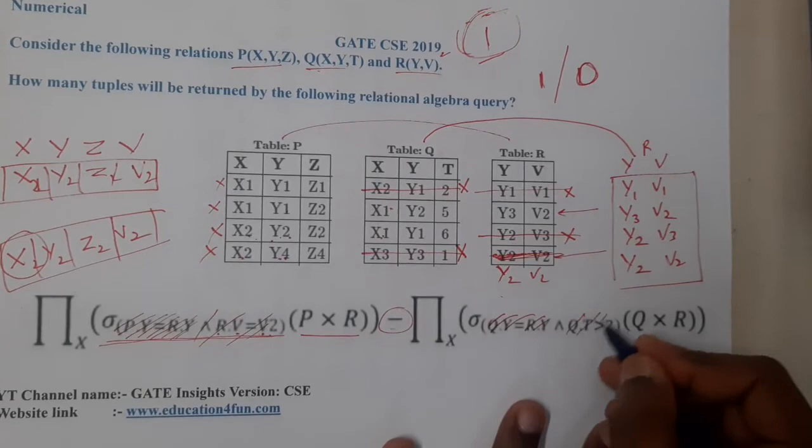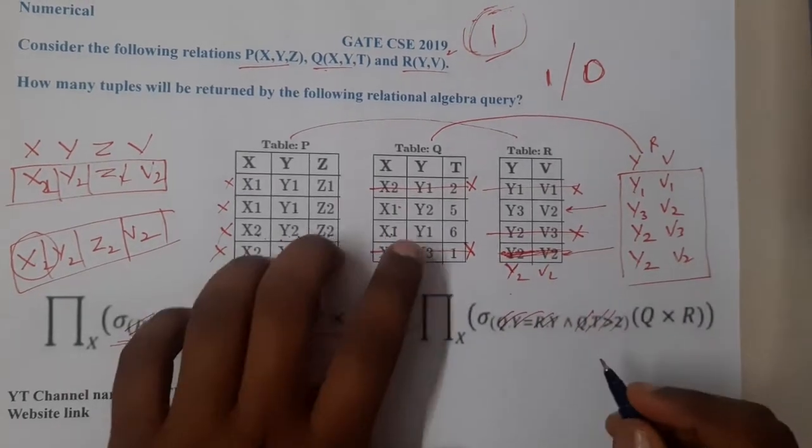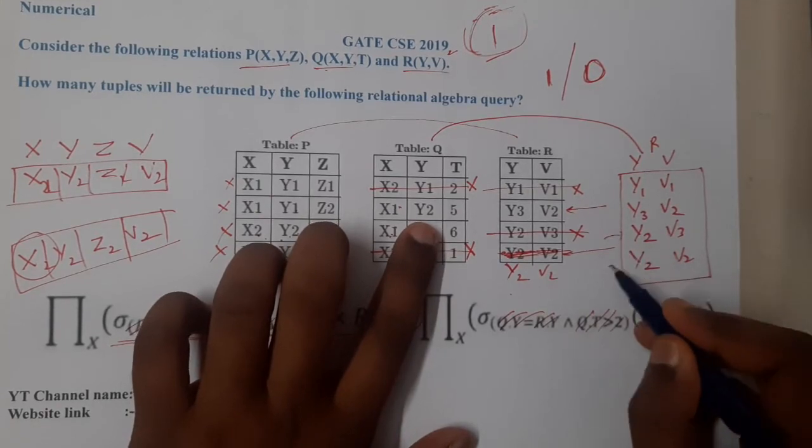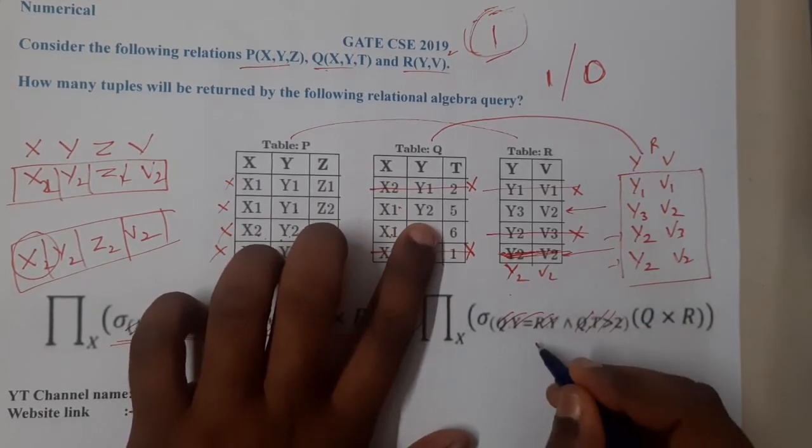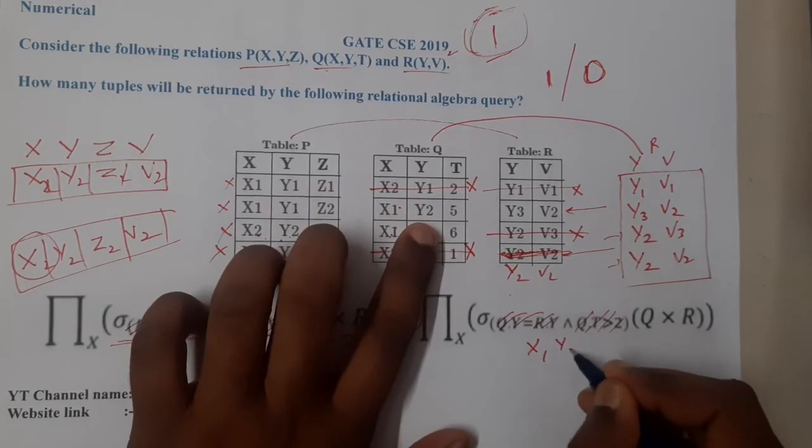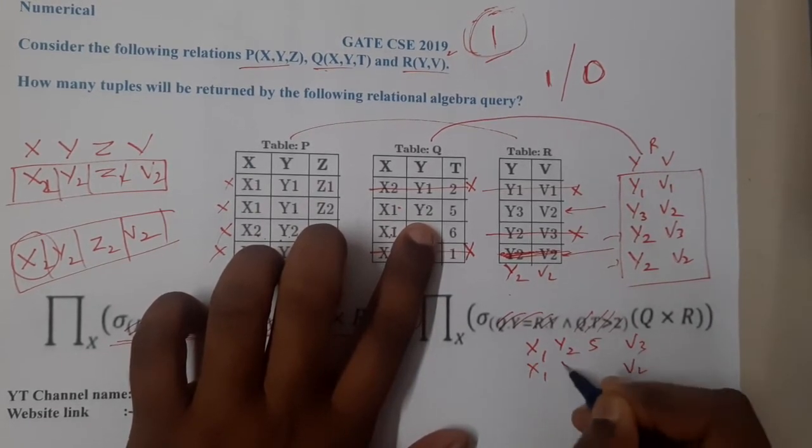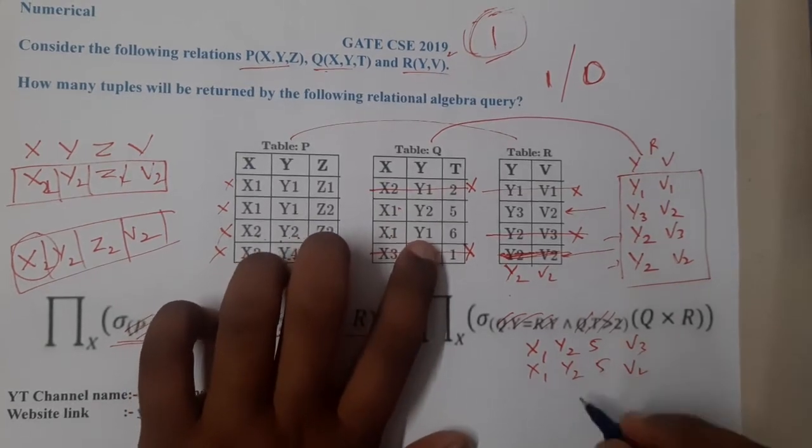So this is also done. So now let us perform cartesian product. So X1 with Y2, is there Y2 in this particular thing? Yes, so here we are having two Y2s. So we are going to get X1, Y2, 5 with V3 and V2. So X1, Y2, 5.